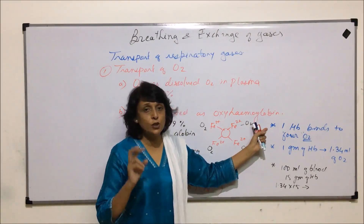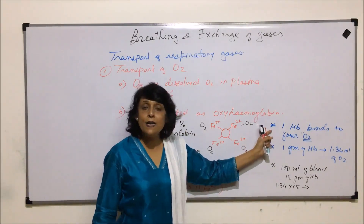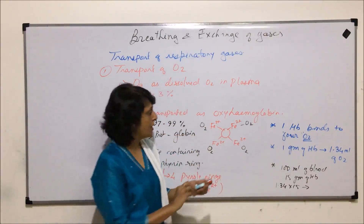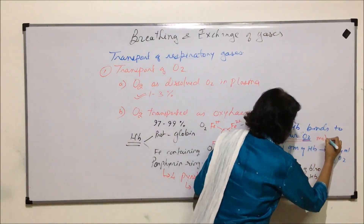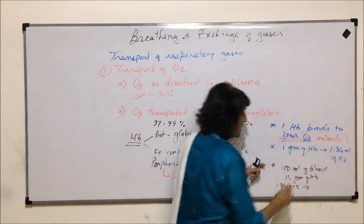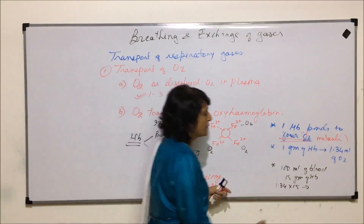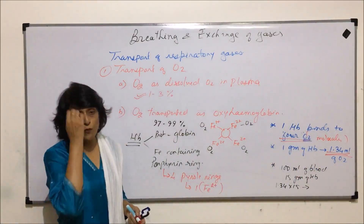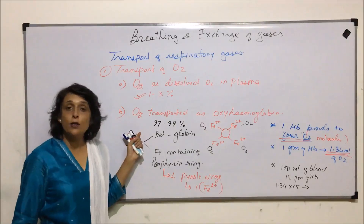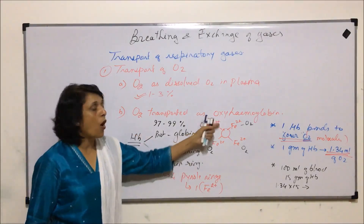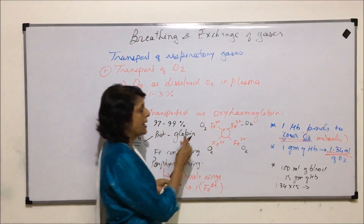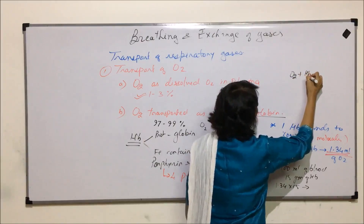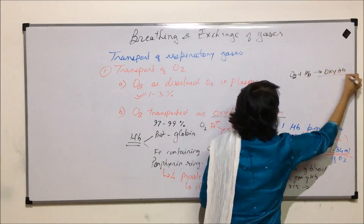Two important numbers for hemoglobin: one hemoglobin molecule is going to transport four oxygen molecules, and one gram of hemoglobin is capable of transporting 1.34 milliliters of oxygen. The major part of oxygen is transported as oxyhemoglobin, and the simple reaction we write is: oxygen + hemoglobin → oxyhemoglobin.